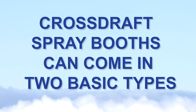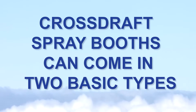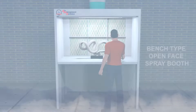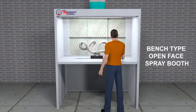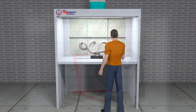Crossdraft spray booths can come in two basic types. The smallest type of Crossdraft spray booth is the bench-type spray booth. They are typically used to paint products that are small and can be held in your hand or on a rotator.